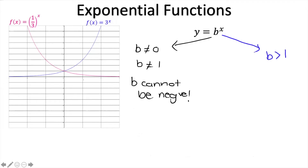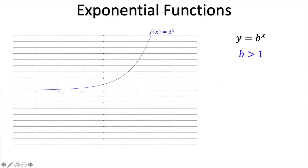So b can be greater than 1, like we saw in the blue graph, and when that is the case it is an increasing graph. Similarly, b can be between 0 and 1 — it can't be negative, but it can be a fraction between 0 and 1 — and when we have a fraction between 0 and 1, we get a decreasing graph. That's a pretty cool generalization about the shape.